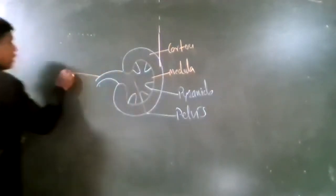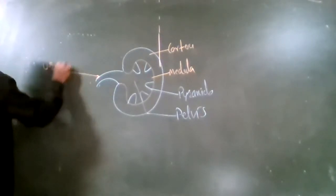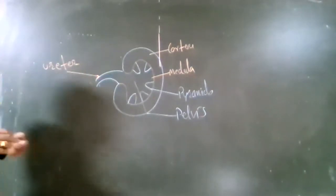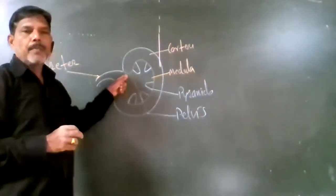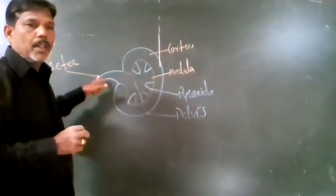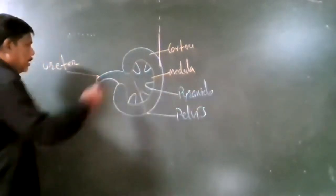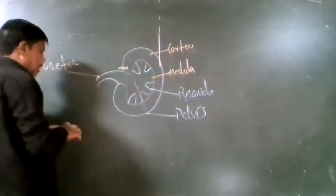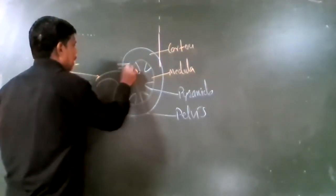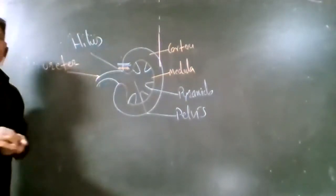From the kidney, a duct arises called the ureter, which passes the filtrate or urine from the kidney to the urinary tract. There is a region where the renal artery and renal vein enter and leave the kidney. This region is called the hilum.